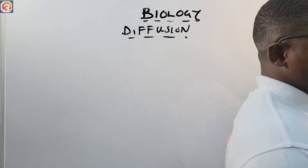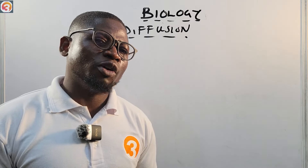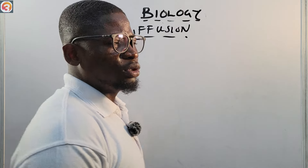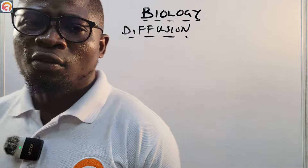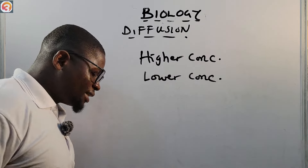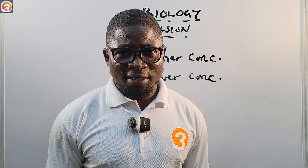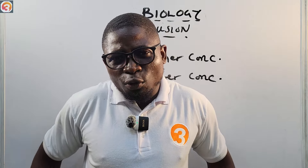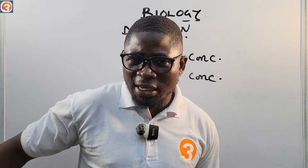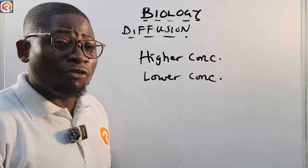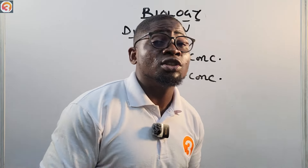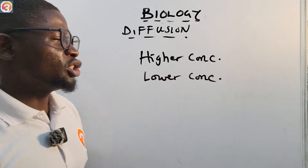Now let's talk about diffusion. Diffusion is the movement of molecules from a region of higher concentration to a region of lower concentration. For example, when you use perfume, it comes from a region of high concentration — near you — and diffuses to regions where it's less concentrated. That is diffusion: from a region of high concentration to a region of low concentration.